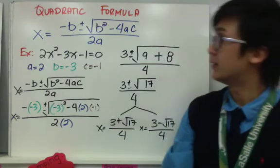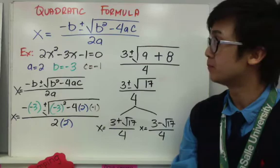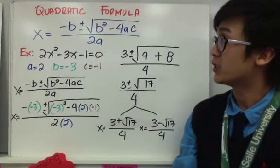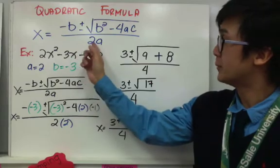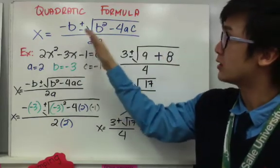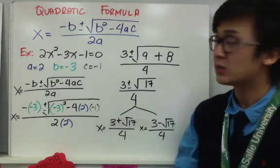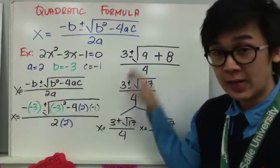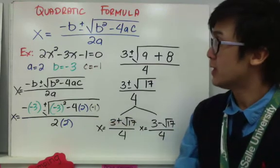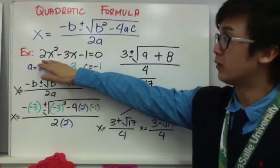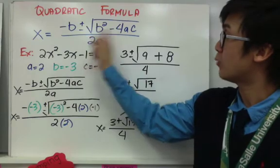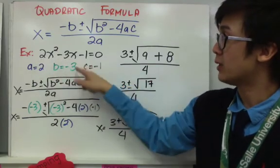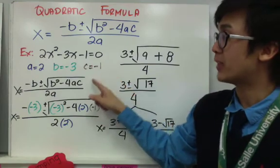Now let's look at an example using the quadratic formula. The quadratic formula can be intimidating because it's a large formula with many letters and signs, and students often make errors with negatives. The key is to show every step and be accurate with operations. Given 2x squared minus 3x minus 1 equals 0, identify A, B, and C. In this case, A is 2, B is negative 3, and C is negative 1. The first step is to write the formula.